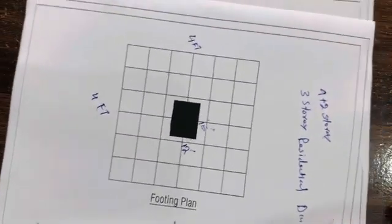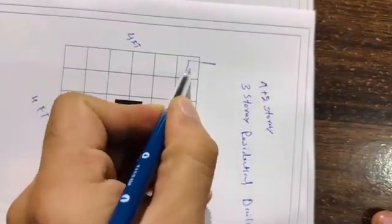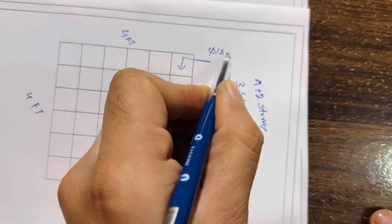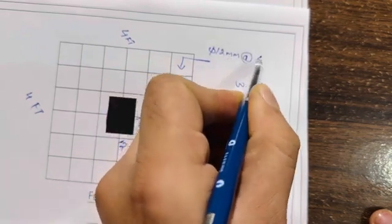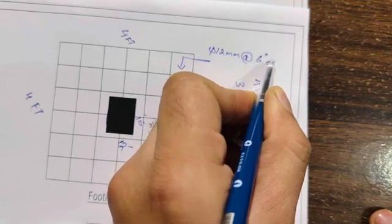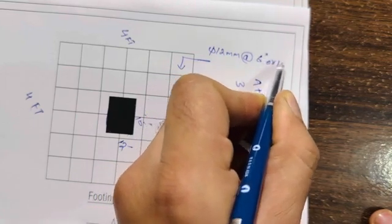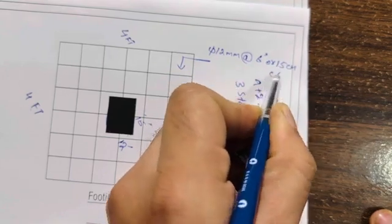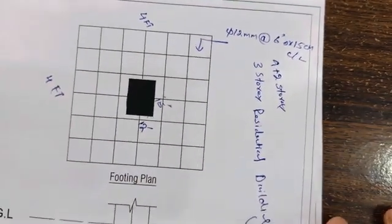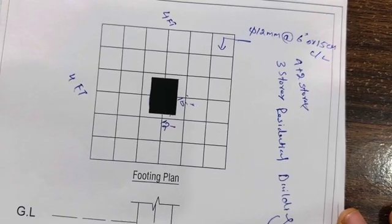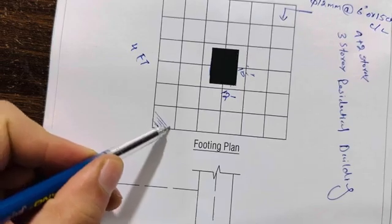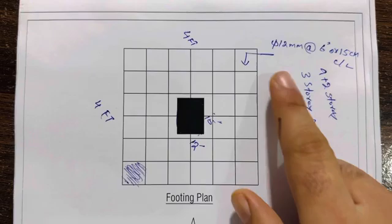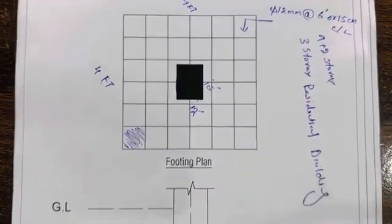You can see the steel reinforcement. We used 12 millimeter diameter steel rods with a spacing of 6 inches, or 15 centimeters, center to center. This is the spacing for both main bars and distribution bars — single layer for both directions: main bar and distribution bars, 12 millimeter with spacing of 6 inches.